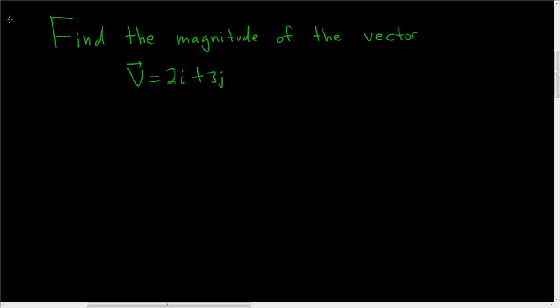Find the magnitude of the vector v equals 2i plus 3j. Solution: the formula for the magnitude of a vector is the square root of a squared plus b squared.